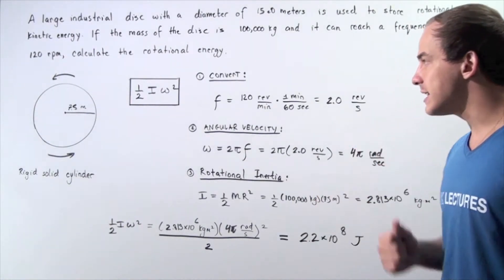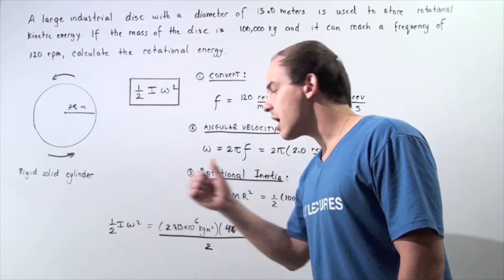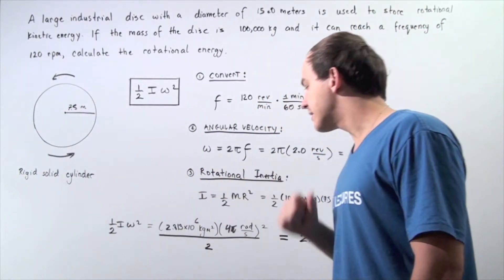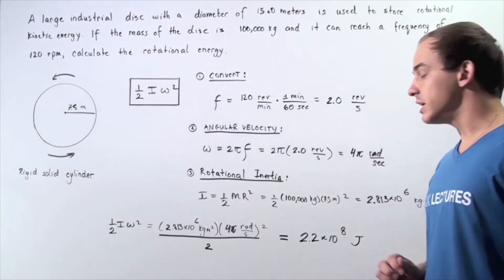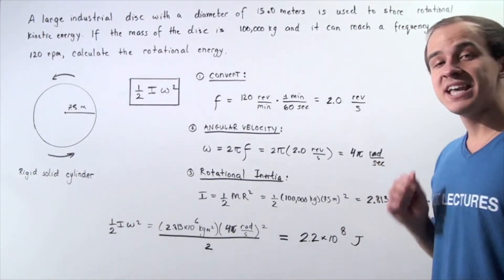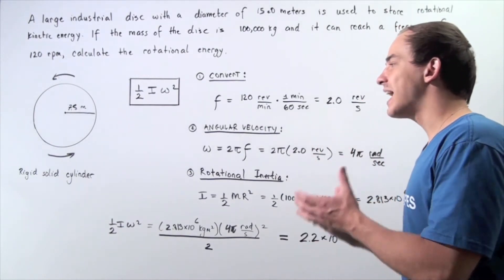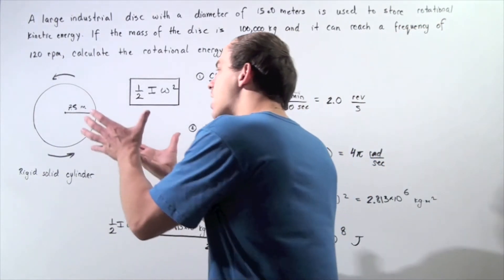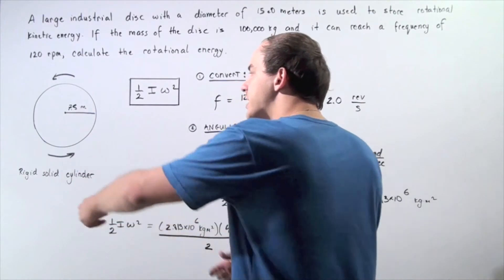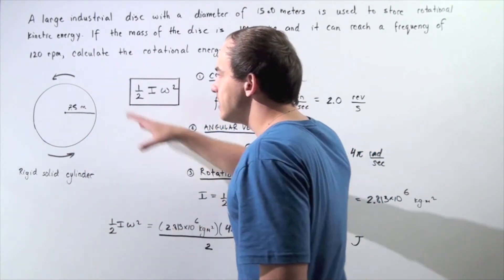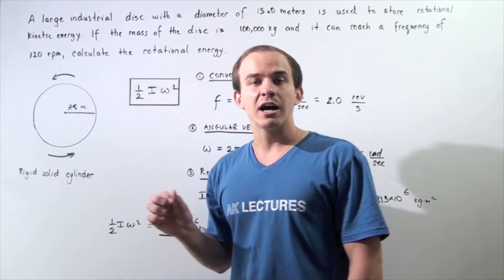In the final step, we simply plug in our values. We plug that into the calculator and we get approximately 2.2 times 10 to the 8th joules of rotational kinetic energy is stored in our object when the object is rotating in the following counterclockwise direction.